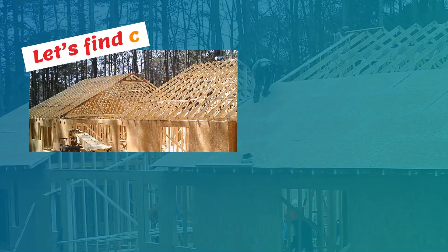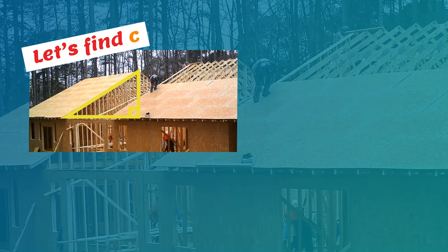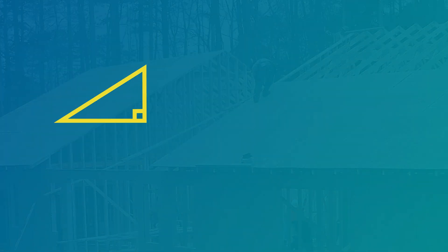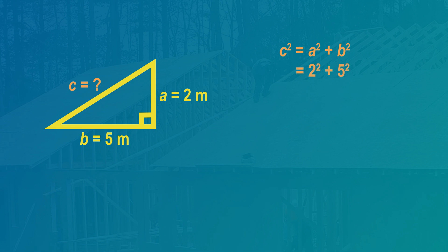In this house, let's use the rule to find the sloped length of this roof. That's C in the rule. Here, A equals 2 meters and B equals 5 meters. Pythagoras' rule to find the hypotenuse is C squared equals A squared plus B squared. A equals 2 and B equals 5. So A squared equals 2 times 2. B squared equals 5 times 5. Now 2 times 2 is 4. 5 times 5 is 25.